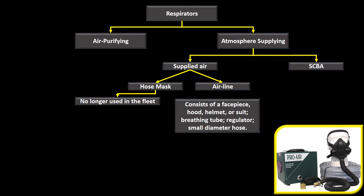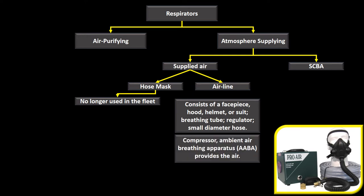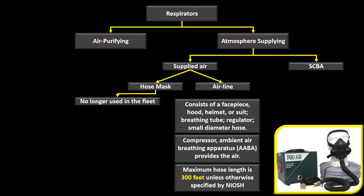An airline respirator consists of a facepiece, hood, helmet, or suit; a breathing tube; a regulator; a small-diameter hose; and a compressor or ambient air breathing apparatus that provides air. The apparatus producing the air is not carried by the person — it is placed in a non-hazardous area. The hose can be a maximum of 300 feet, unless otherwise specified by NIOSH.